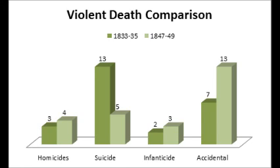Focusing on the homicide data: while one would expect the homicide rate to escalate as the Irish came flooding in during the famine, this does not appear to be the case. In fact, the number remained about the same. Between 1833 and 1835, there were approximately three homicides documented in the coroner's inquest. Between 1847 and 1849, there were four homicides documented by the coroner. The fact that the number remained approximately the same suggests that while general crime and violence increased in the Five Points during that period, this had very little effect on homicide.